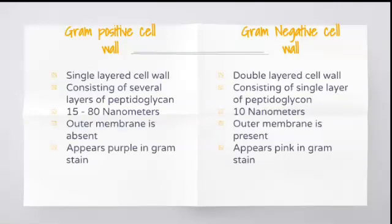The size of the gram-positive cell wall is 15 to 80 nanometers whereas gram-negative it is 10 nanometers. There is no outer membrane in gram-positive cell wall whereas gram-negative cell wall has an outer membrane. Gram-positive organisms appear purple in gram stain and gram-negative cell wall appears pink in gram stain.